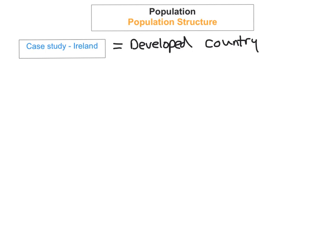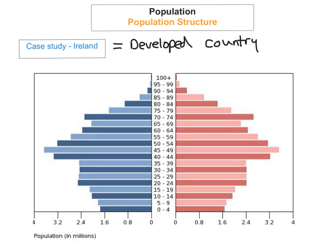The next thing you need to know for the junior certificate examination is another case study on population structure. An example of a developed country we can use is Ireland. Here's the population pyramid for Ireland, and Ireland is a developed country, so it should look different from Brazil.